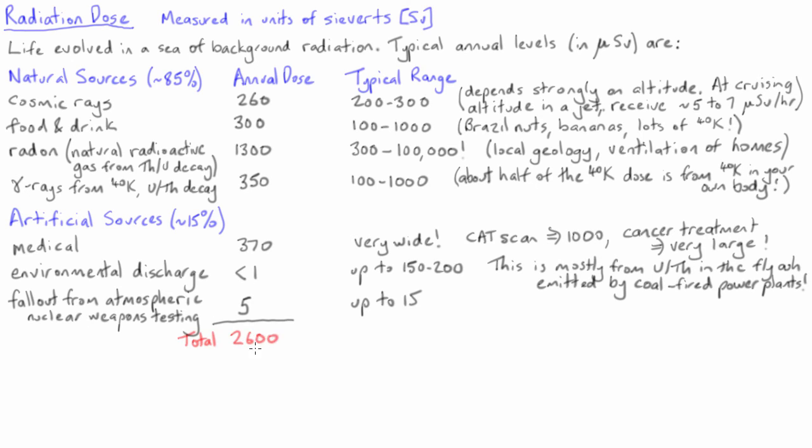On average, the total annual dose for radiation is of the order of 2600 microsieverts, but with a huge amount of natural variability. It is worth noting that this continual low-level background dose is something that has been around for the entire time of life on Earth, and life as we know it evolved in this sea of background radiation.